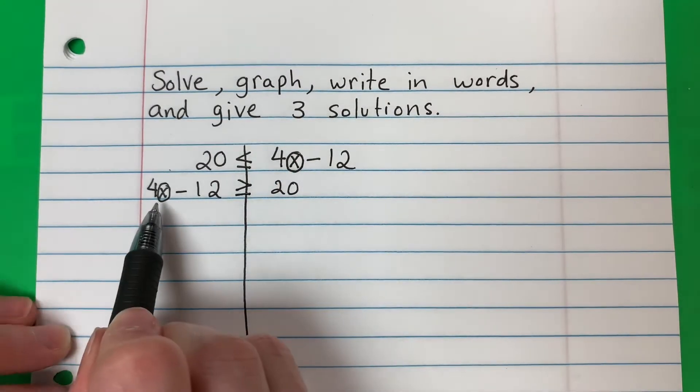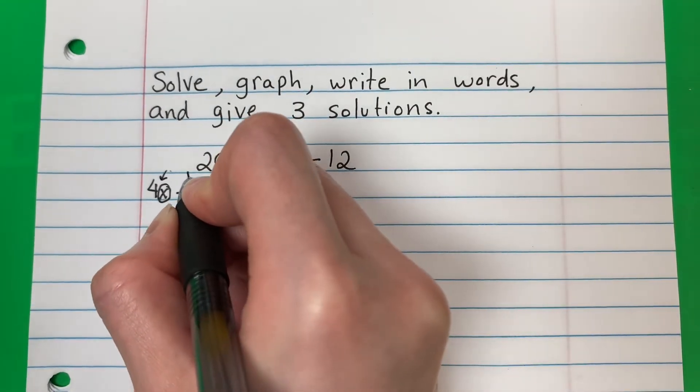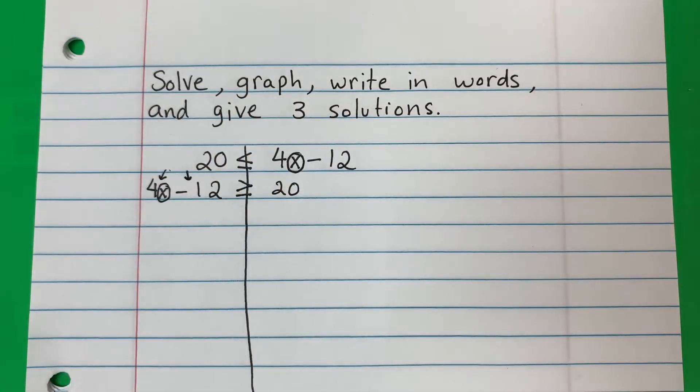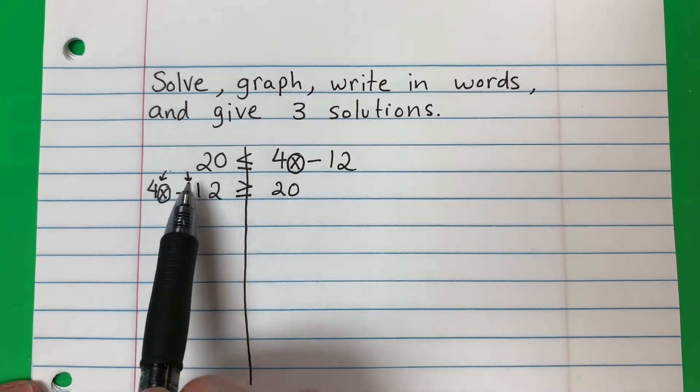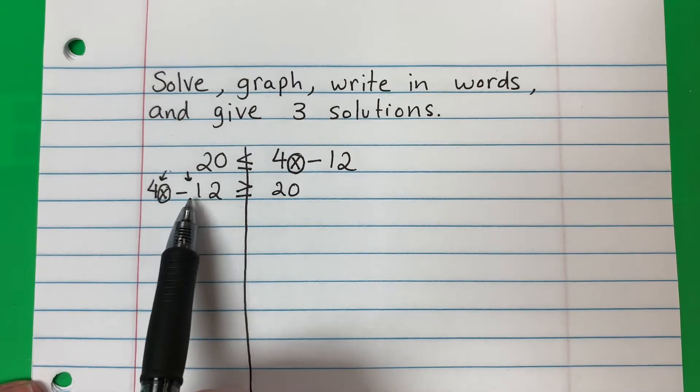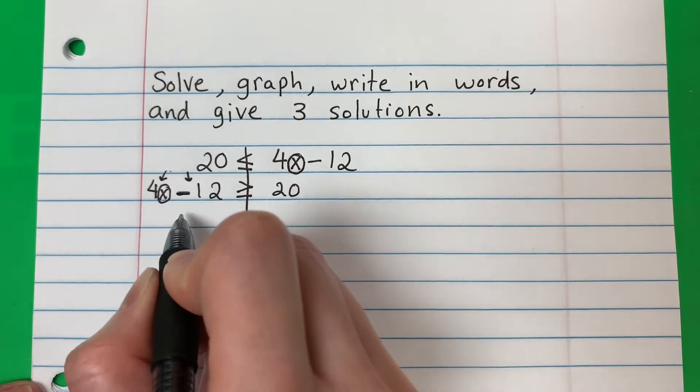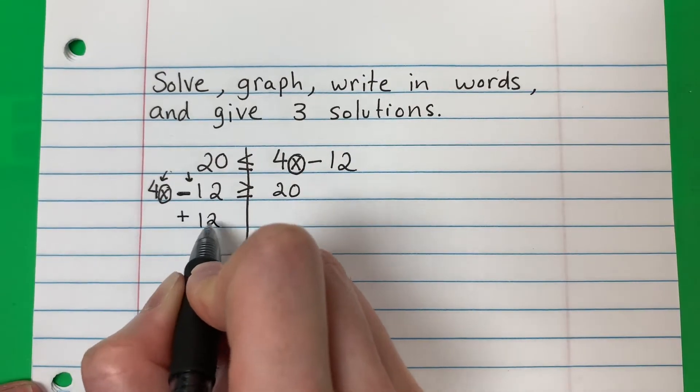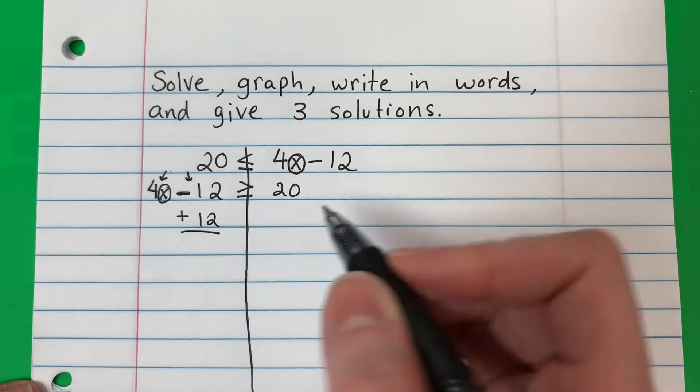Okay, now, what is with X? I have 4 and negative 12. Never move the number with the letter first. So I will be moving the other number, negative 12. So the opposite of minus is plus. So plus 12. When I do an opposite, I need to copy.